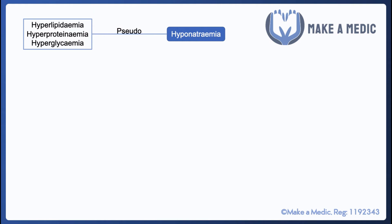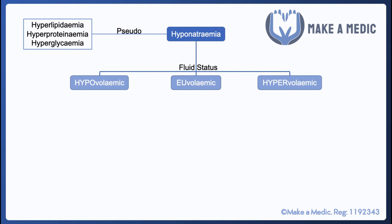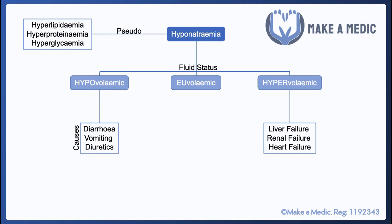If you are satisfied that a patient has true hyponatremia, the next step involves assessing their fluid status, as this helps clearly delineate the different causes. If the patient appears dehydrated and hypovolemic, the main causes include diarrhoea, vomiting, and diuretics. If the patient appears fluid overloaded, the main causes include liver failure, renal failure, and heart failure.